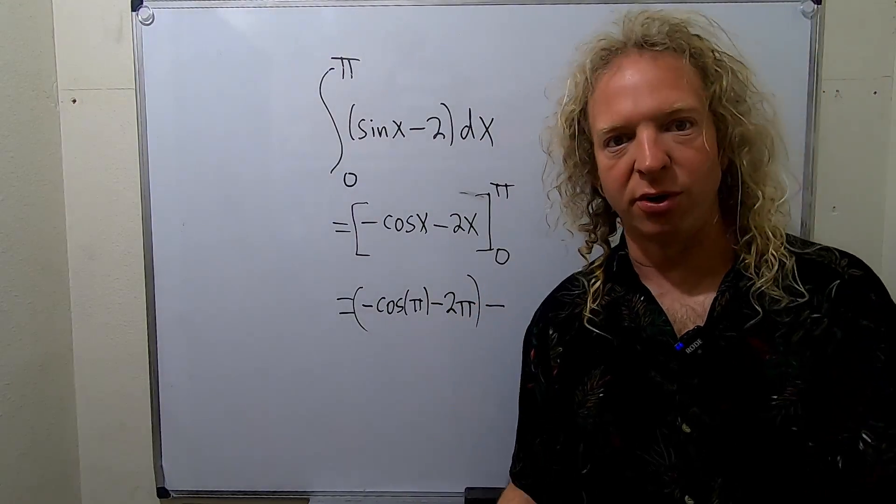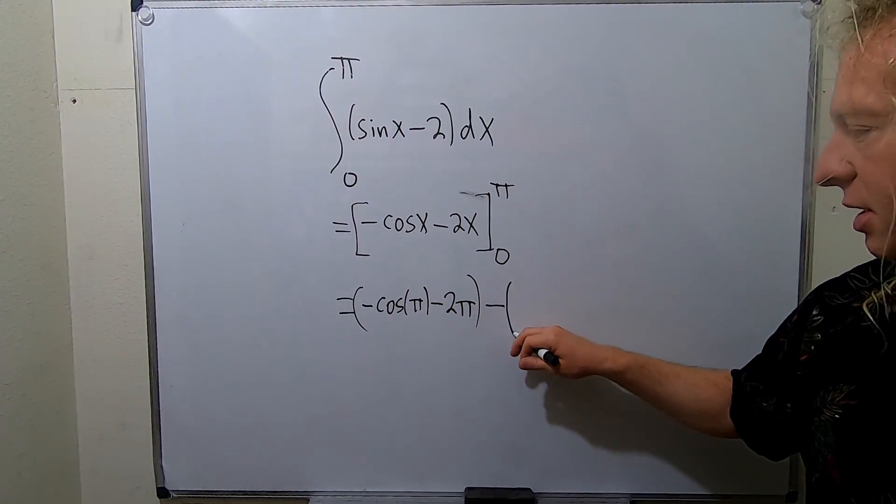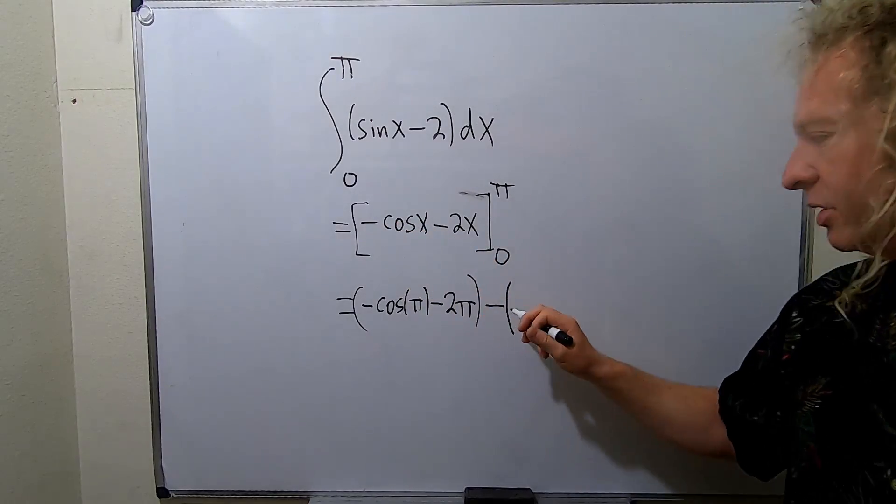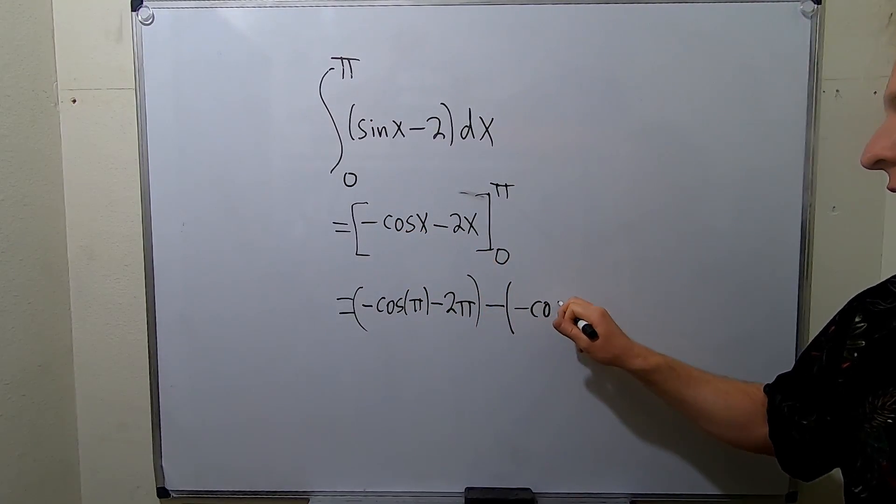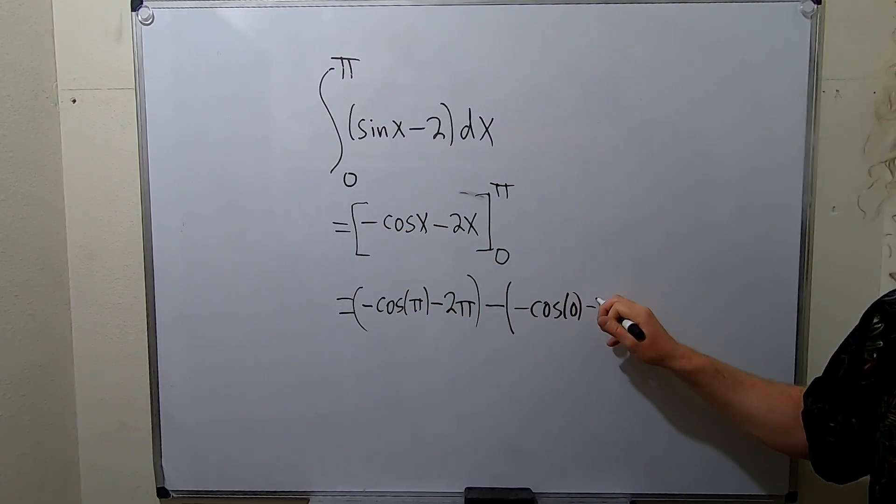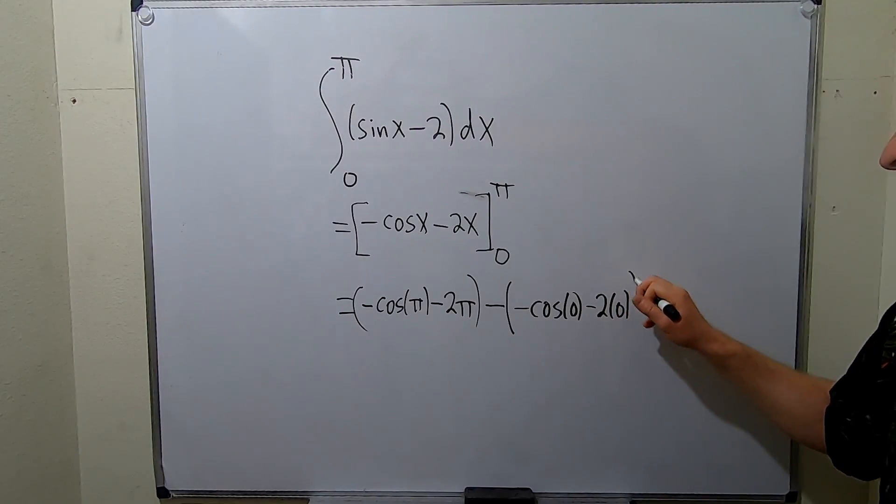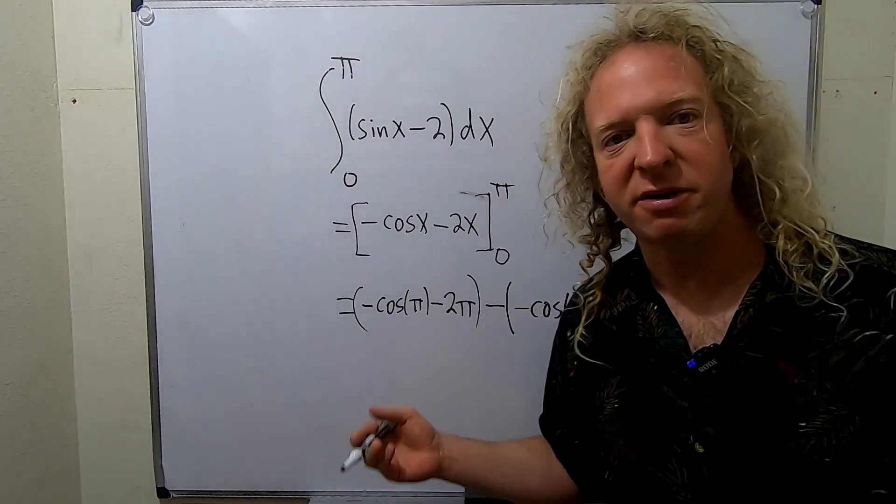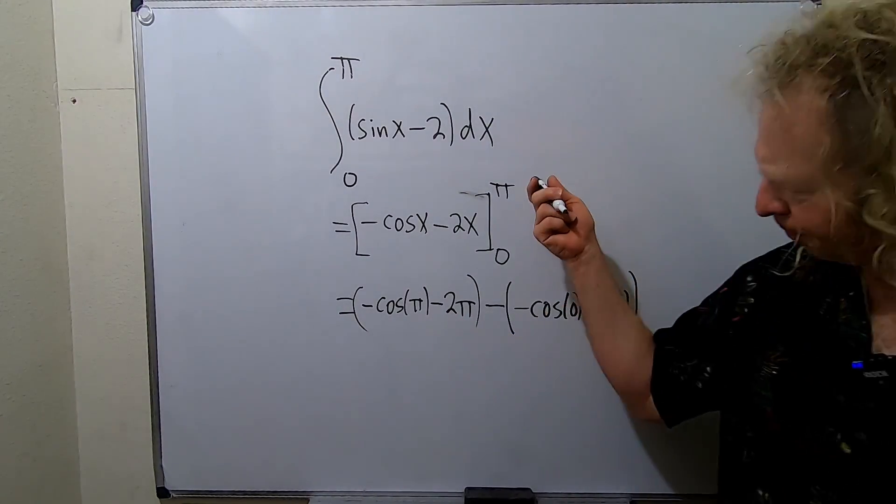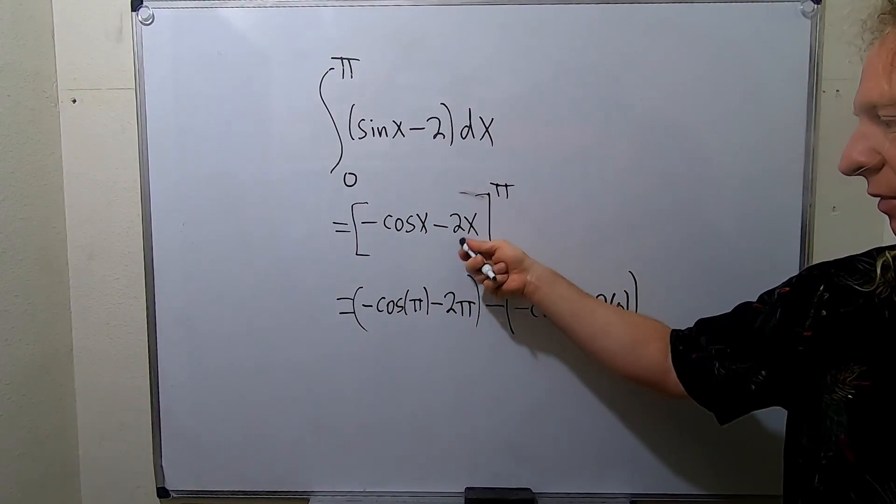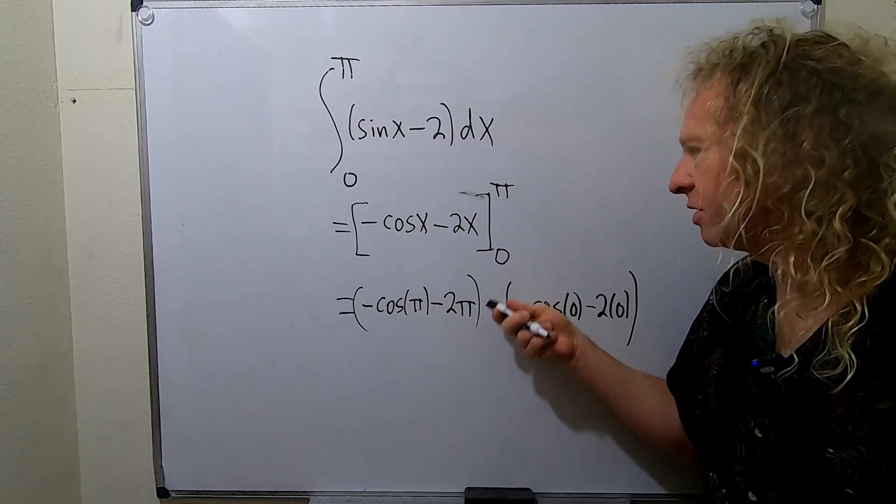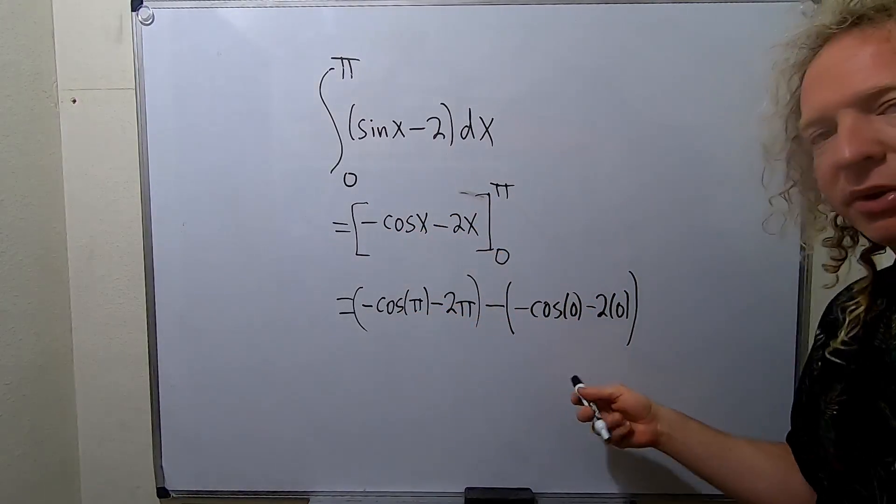Now you plug in the 0s. So I'll put a parentheses here. So negative cosine 0, and then minus 2 times 0. I didn't skip any steps. I don't know why, but maybe it's better not to in this example. So first you plug in the pi, then you put a minus, and then you plug in the 0s.